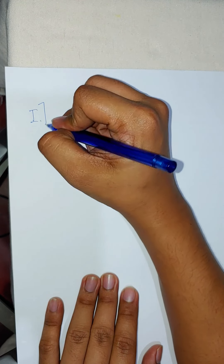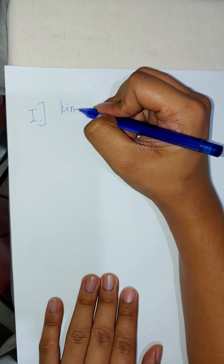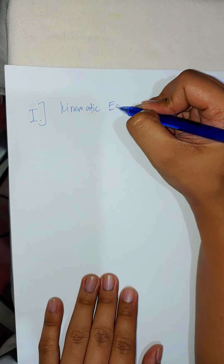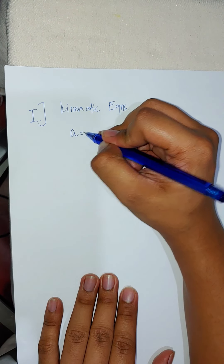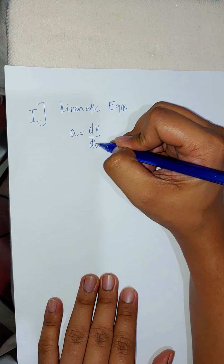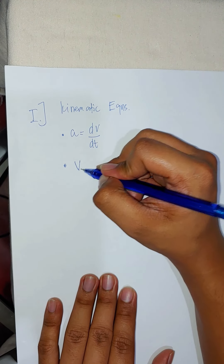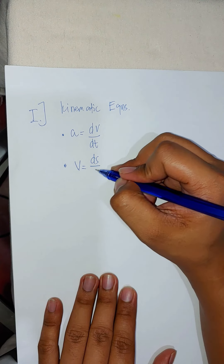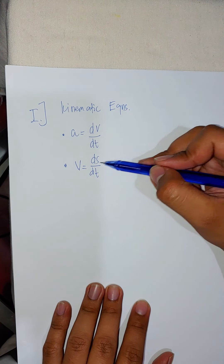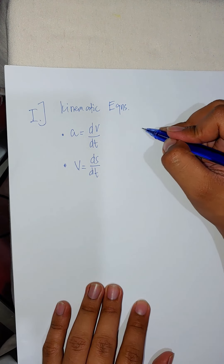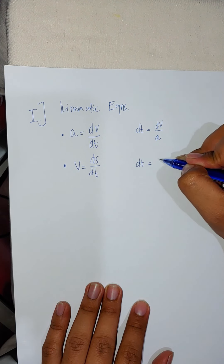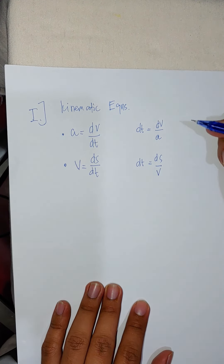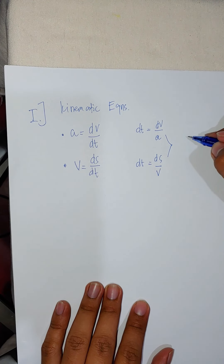For the first set of kinematic equations — the non-constant case — we have acceleration equal to dv/dt and velocity equal to ds/dt. Equating these, dt = dv/a and dt = ds/v, which gives us the important equation: dv/a = ds/v.